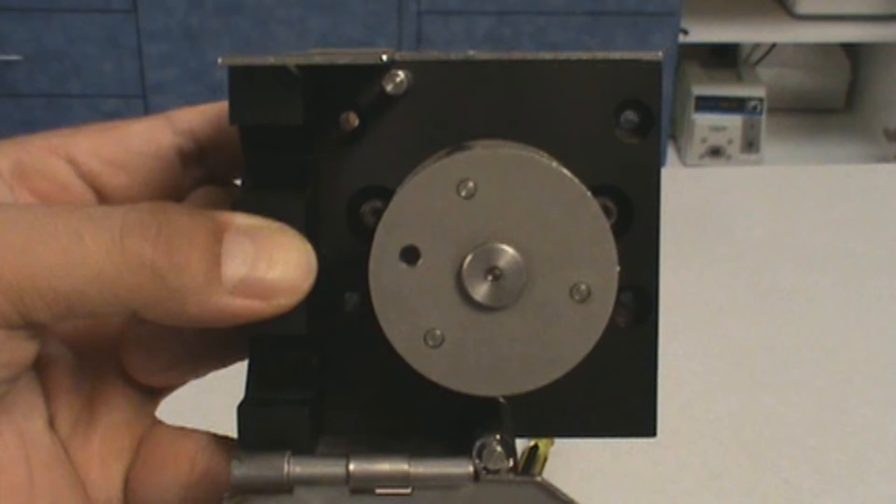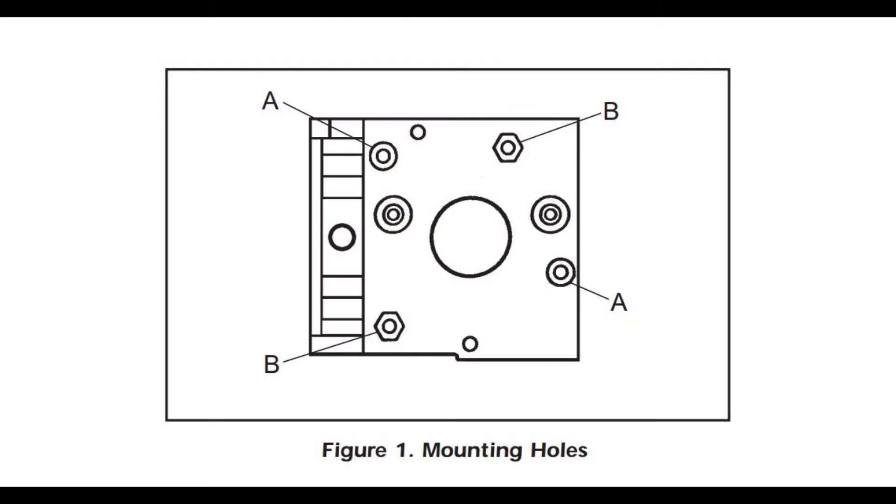You will want to note that if you want the tubing entry and exit to be on the left side of the pump, you will want to make sure to use the round mounting holes labeled A in figure one of the manual. If you want the tubing entry and exit to be on the top of the pump head, you will want to make sure to use the hexagonal mounting holes labeled as B in figure one of the manual.